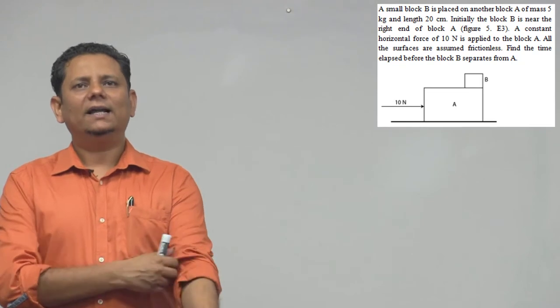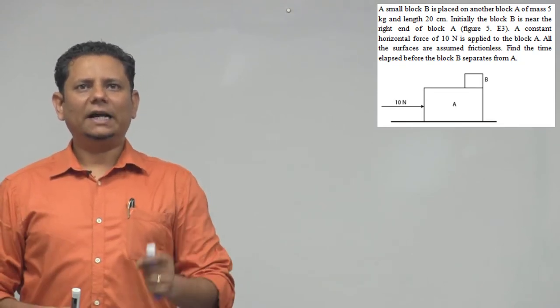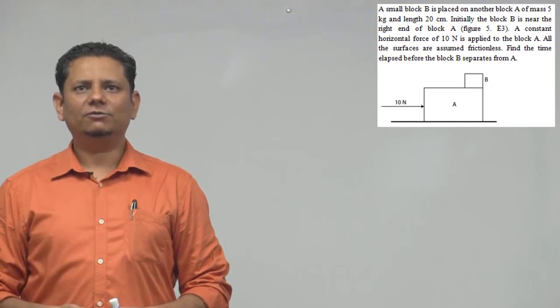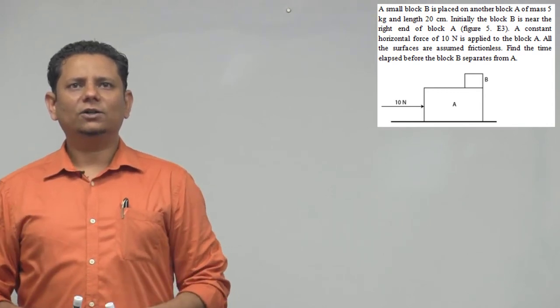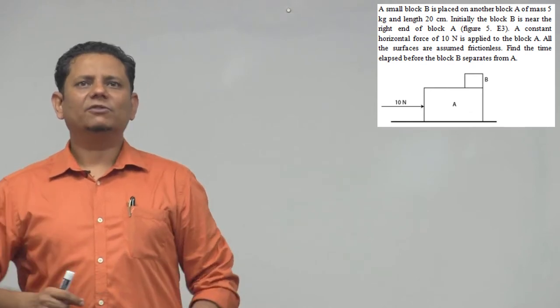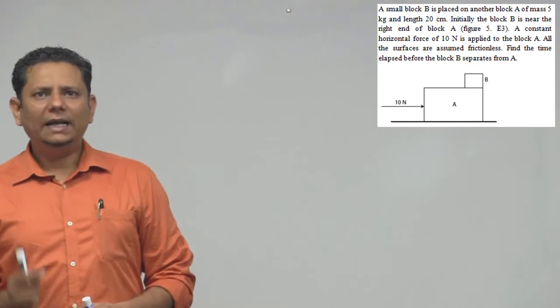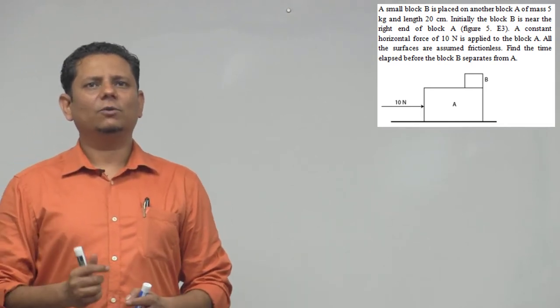Next question. A small block B is placed on another block A of mass 5 kg and length 20 cm. Initially the block B is near the right end of block A as shown in the figure. A constant horizontal force of 10 N is applied to the block A. All the surfaces are assumed to be frictionless. Find the time elapsed before the block B separates from block A.